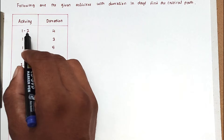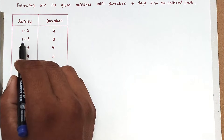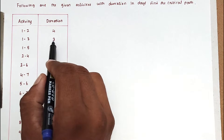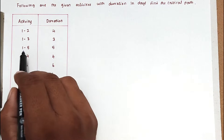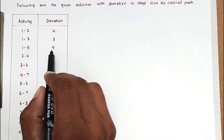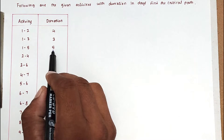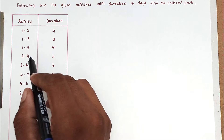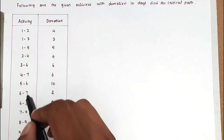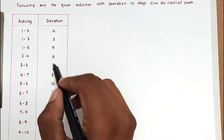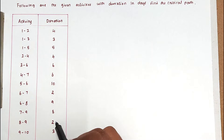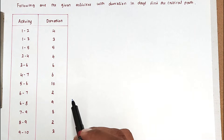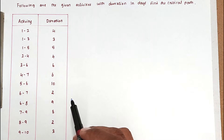The activities and corresponding durations are given. Activity 1-2 has duration 4, activity 1-3 has duration 3, and activity 1-5 has duration 5, and so on. First we have to draw the network diagram, and after that we have to find out the critical path.